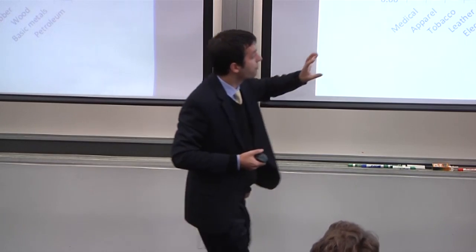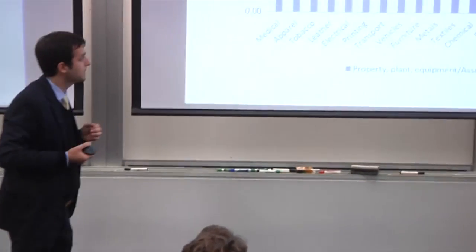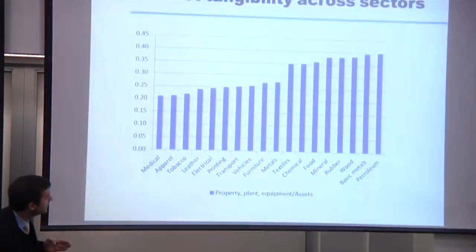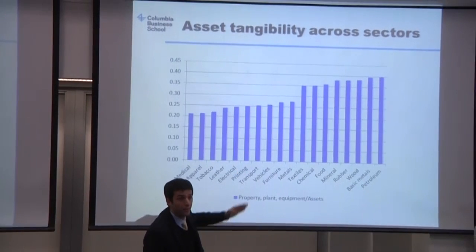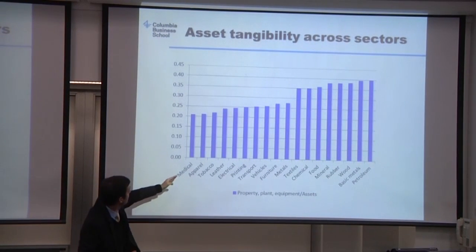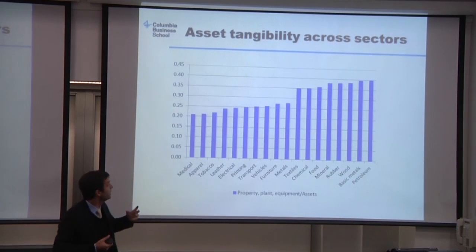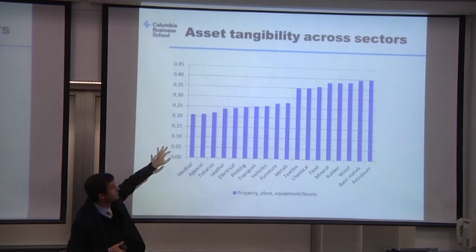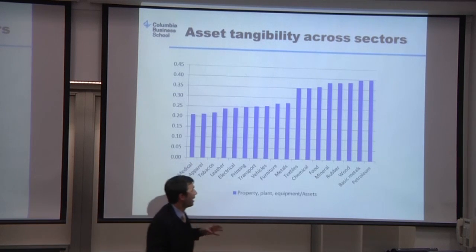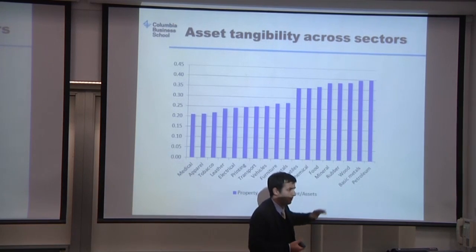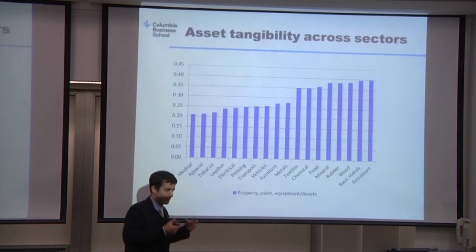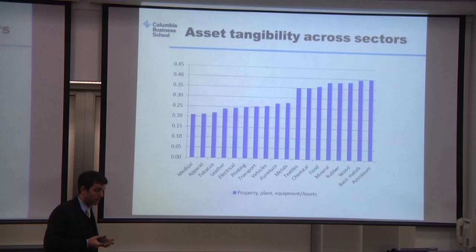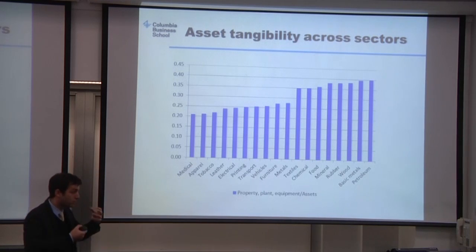These are some of the manufacturing industries in my sample. On the vertical axis I have the degree of asset tangibility, and there's a lot of variation across industries. For example, manufacturing of medical instruments is an industry that operates with low asset tangibility — about 20% of overall assets are tangible. On the other hand, manufacturing of basic metals is an industry where 40% of assets are tangible, so it has more asset tangibility.